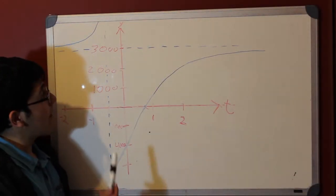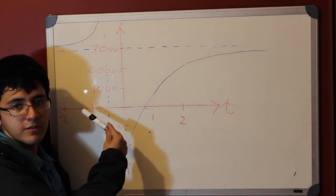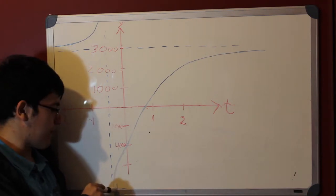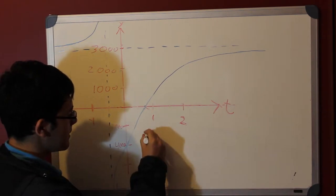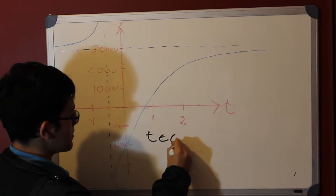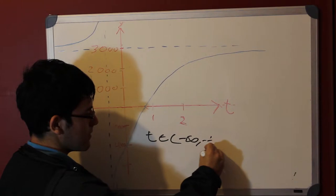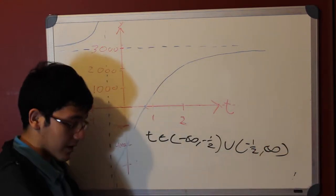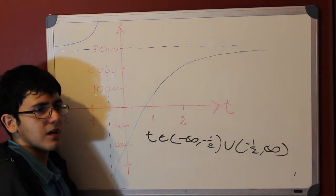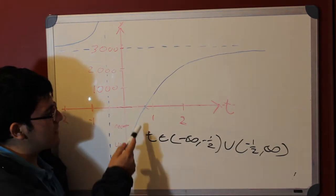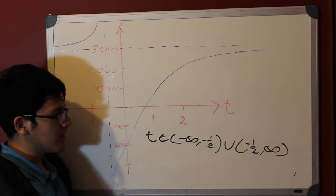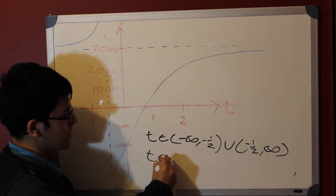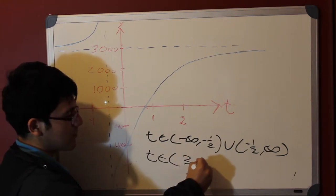As we can see, the graph shows how the population of rabbits increased from minus infinity to the vertical asymptote that is minus one-half. So the interval will be T belongs to minus infinity to minus one-half, union minus one-half to infinity. But in real cases, we cannot have negative population. So in this case, we have to get the x-intercept to get when the population really begins to increase. So it will be from T belongs to 3 to infinity.